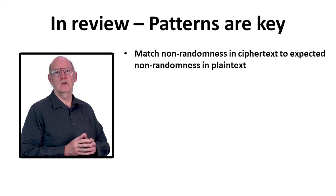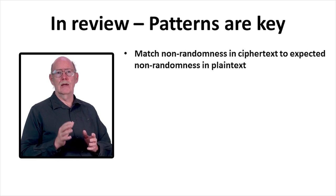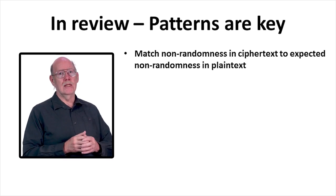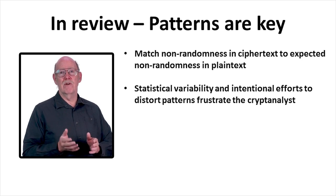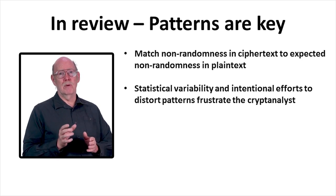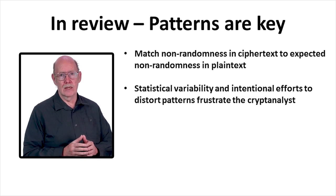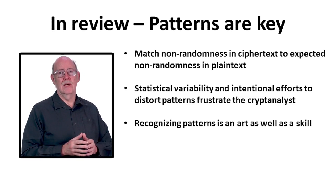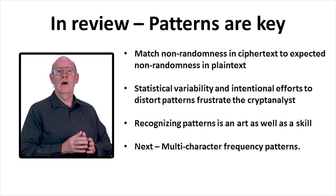We'll bring this lesson to a close here. To recap, frequency analysis of intercepted ciphertext can provide significant clues to aid the cryptanalyst, at least to the degree that non-randomness in the ciphertext is due to non-randomness in the plaintext. But frequency analysis isn't a magic bullet, even for a monoalphabetic cipher, because of statistical variability — particularly in limited length samples. Plus, Alice and Bob usually take some steps to intentionally distort the patterns manifested in the ciphertext. This is made all the more difficult because even recognizing and reading the plaintext is somewhat of an art and an acquired skill. In the next lesson, we'll continue looking at frequency analysis, focusing our attention on multi-symbol sequences and how we might use them.